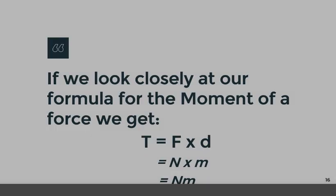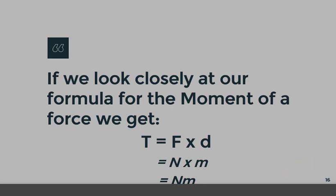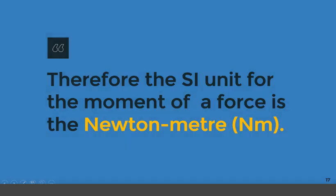Looking closely at our formula T equals F times D: the SI unit for force is the newton and the SI unit for distance is the meter. Because we are multiplying both quantities, both units are multiplied, giving us newton meter. Therefore the SI unit for the moment of a force is the newton meter.